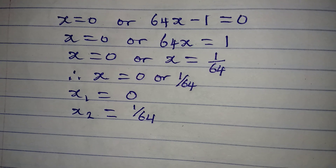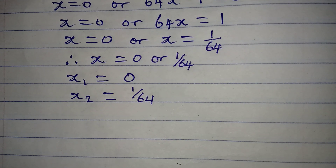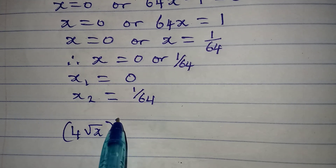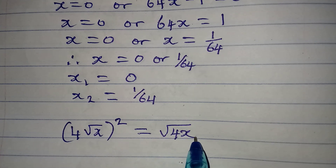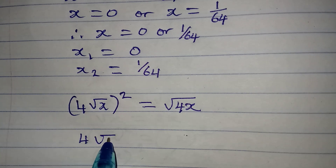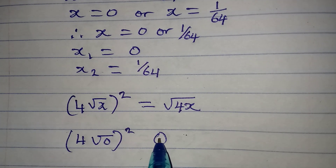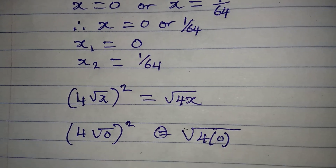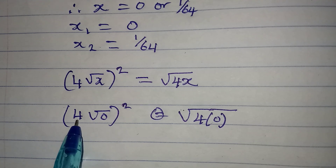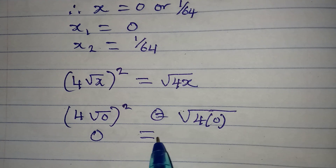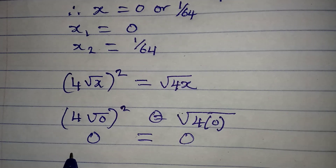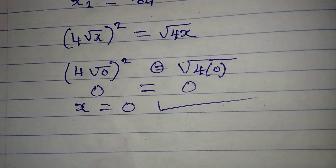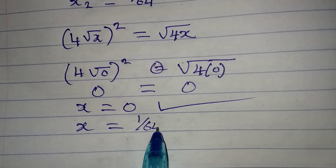Let's verify both solutions in the original equation: 4 times the square root of x squared equals the square root of 4x. When x equals 0, we get 4 times the square root of 0 squared. The square root of 0 is 0, times 4 is 0; and the square root of 4 times 0 is also 0. So x equals 0 satisfies the equation.